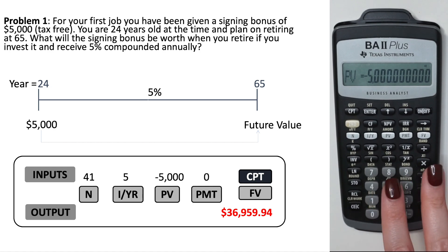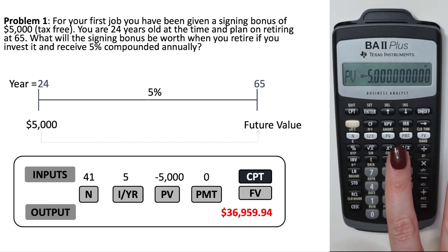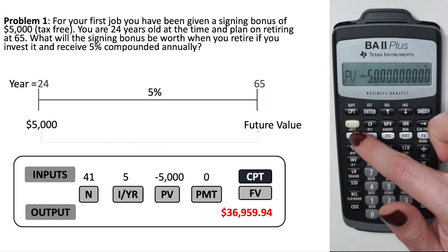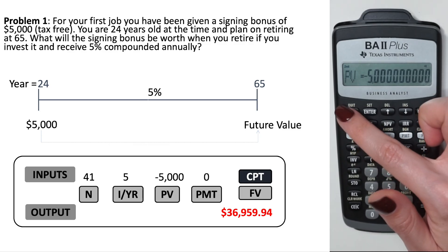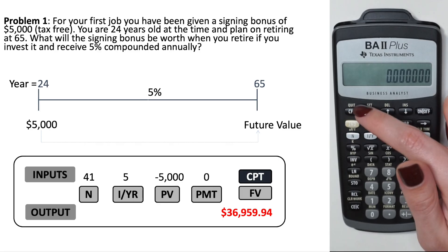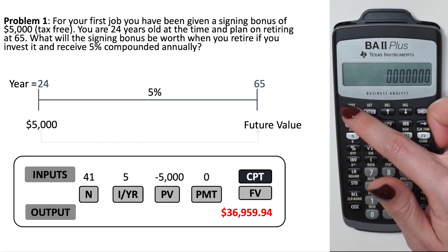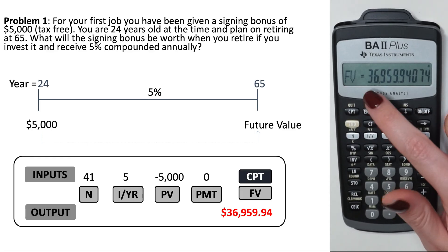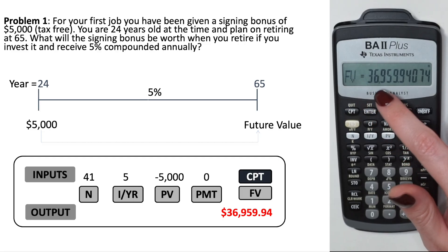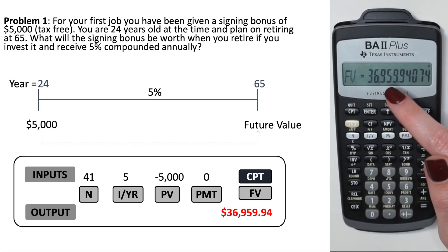I leave the payment option exactly as it is — I don't set anything for that. To get out of the menu, I do 2nd Compute to quit, then press the Compute button, and when I click on Future Value it gives me the future value of that cash flow: $36,959.